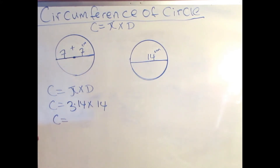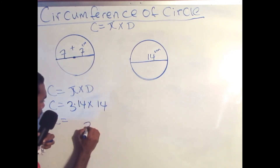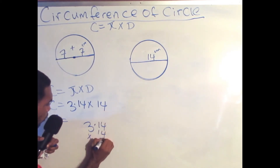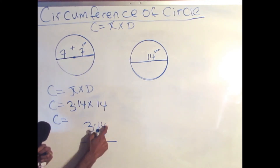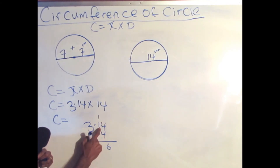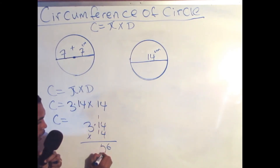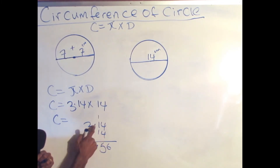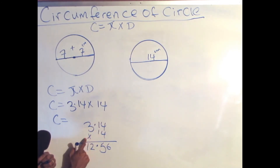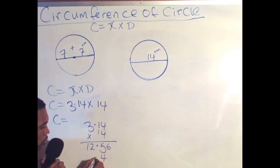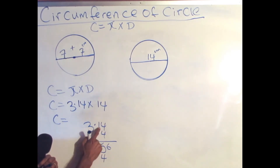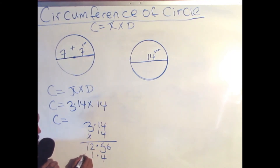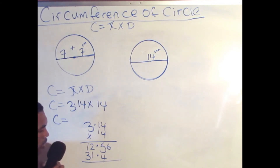In order to get the circumference of this circle, I simply multiply 3.14 times 14. Starting with 4 times 4 is 16 — bring down the 6, carry the 1. Then 4 times 1 is 4, plus 1 is 5. Respect the decimal. 4 times 3 is 12, giving me 12.56. Then for the tens digit: 1 times 4 is 4, respect the decimal, 1 times 1 is 1, and 1 times 3 is 3. Then we add these together.